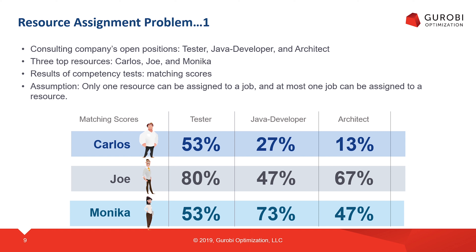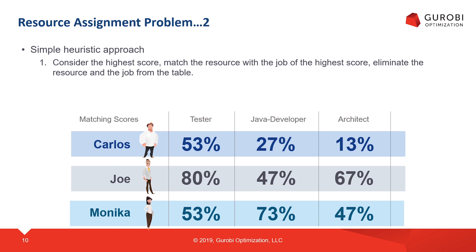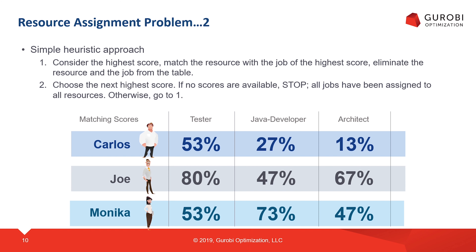Assume that through past work and management assessment, for each resource there is a matching score. The matching score tells you how well a resource can perform a job. For example, if Carlos works as a tester, his performance will be 53 percent — that will be his productivity. In the table shown, you have the matching scores for each resource and each job. The assumption is that for each job we can only assign one resource, and at most one job can be assigned to a resource.